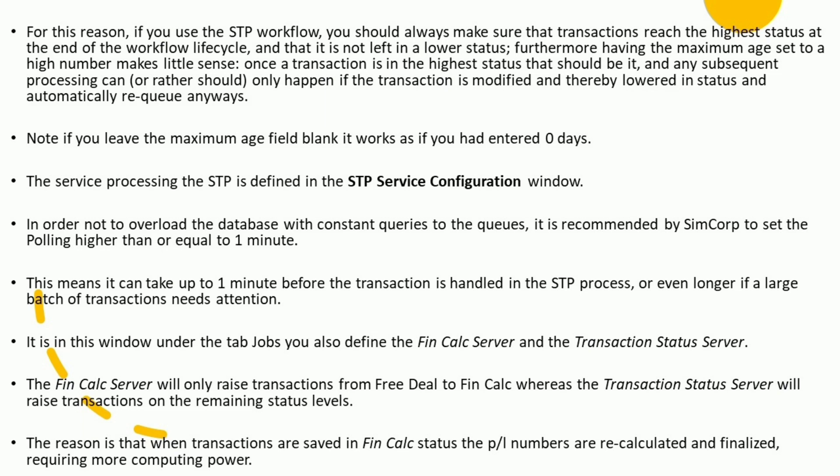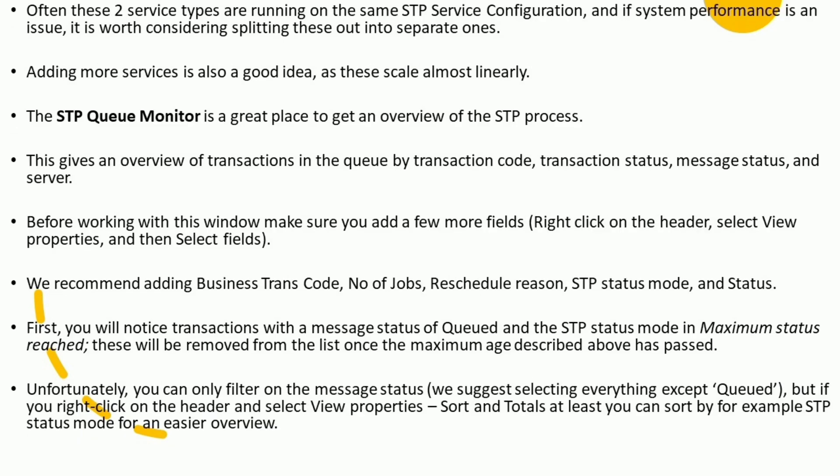It is in this window, under the tab Jobs, that you also define the Fin Calc Server and the Transaction Status Server. The Fin Calc Server will only raise transactions from Free Deal to Fin Calc, whereas the Transaction Status Server will raise transactions on the remaining status levels. When transactions are saved in Fin Calc status, the P&L numbers are recalculated and finalized, requiring more computing power. Often these two service types run on the same STP service configuration, but if system performance is an issue, consider splitting them into separate ones. Adding more services is also a good idea as these scale almost linearly. The STP Queue Monitor is a great place to get an overview of the STP process.